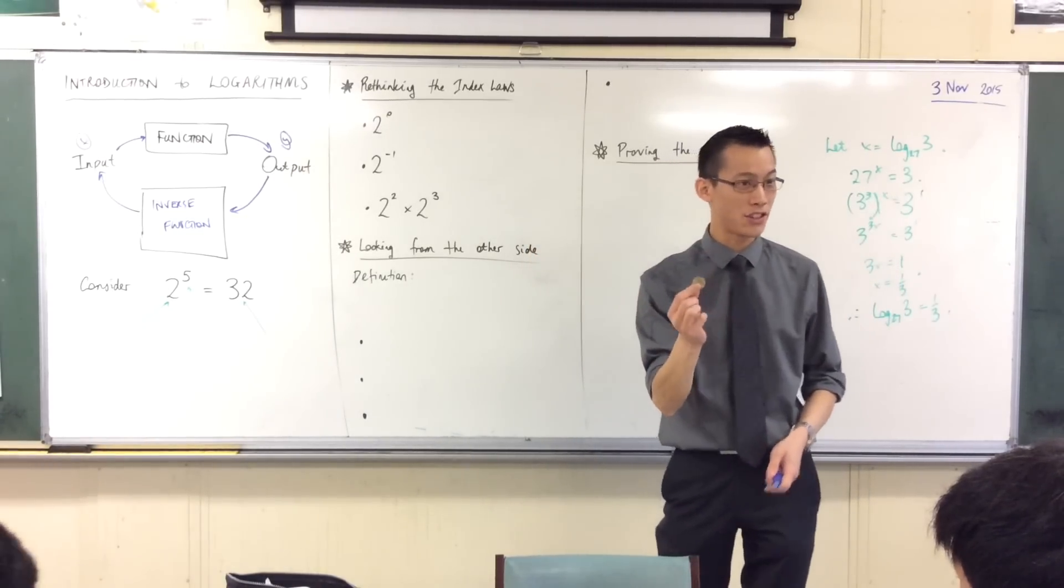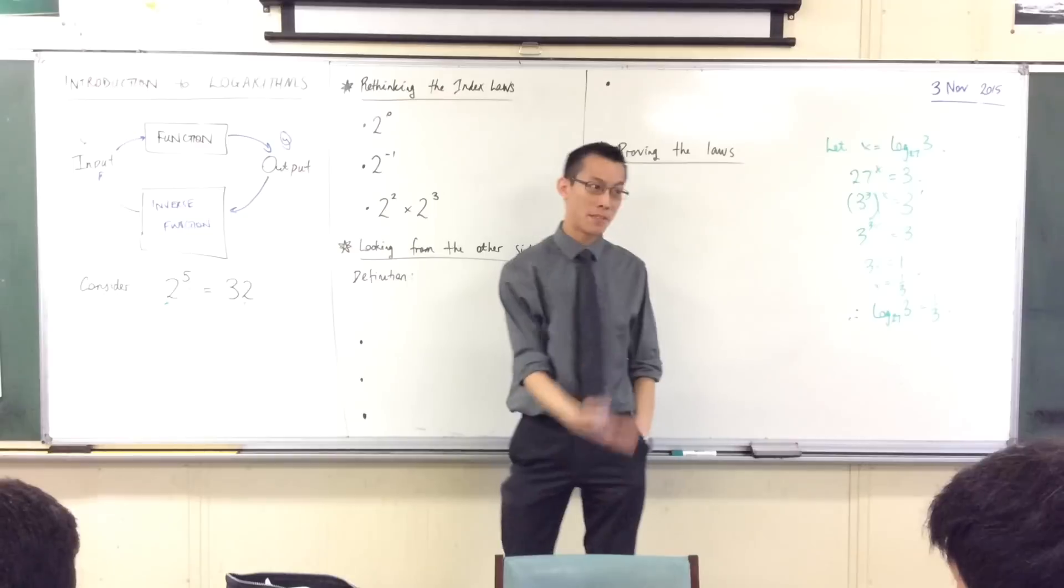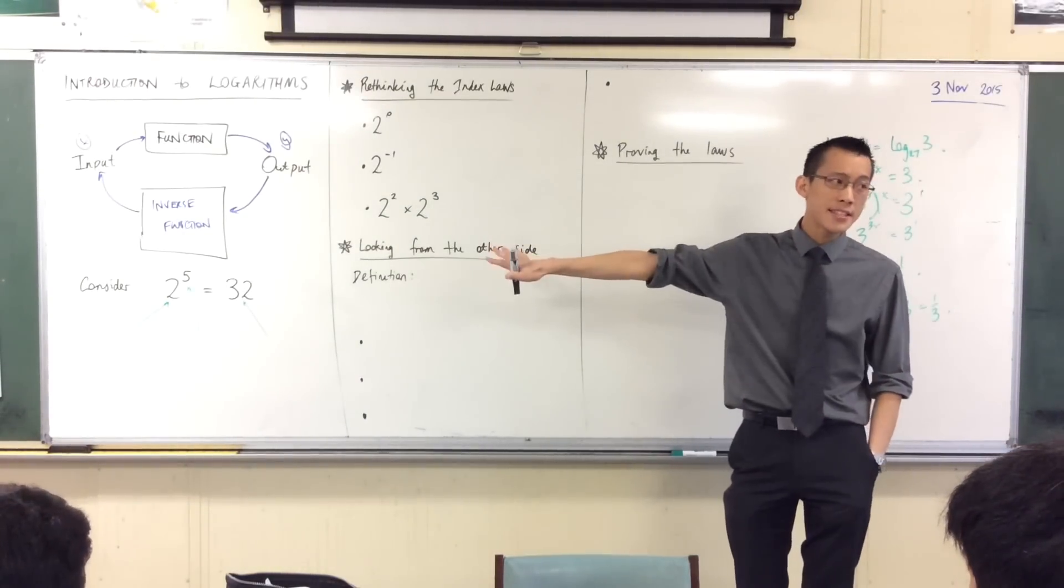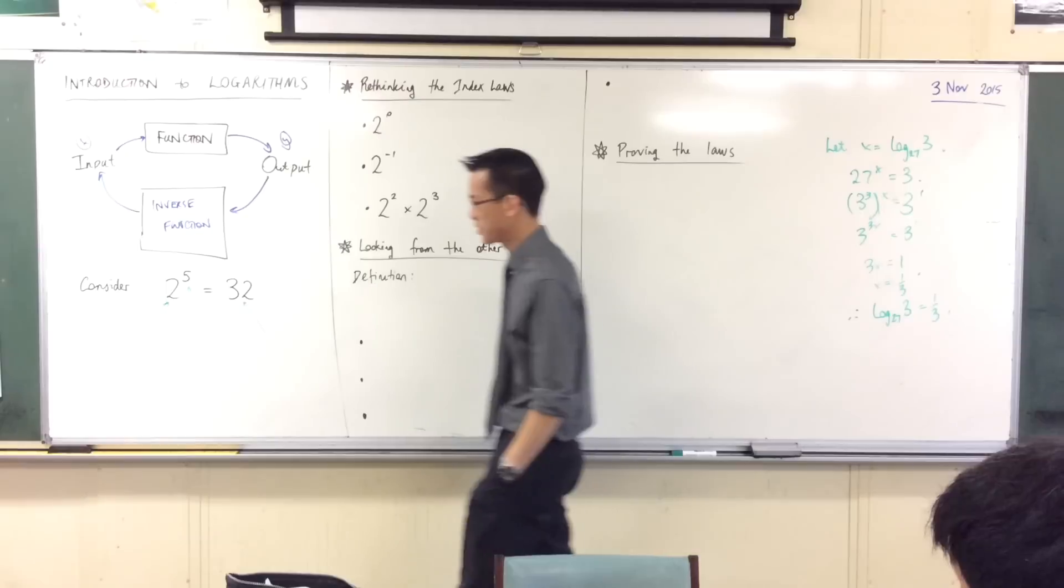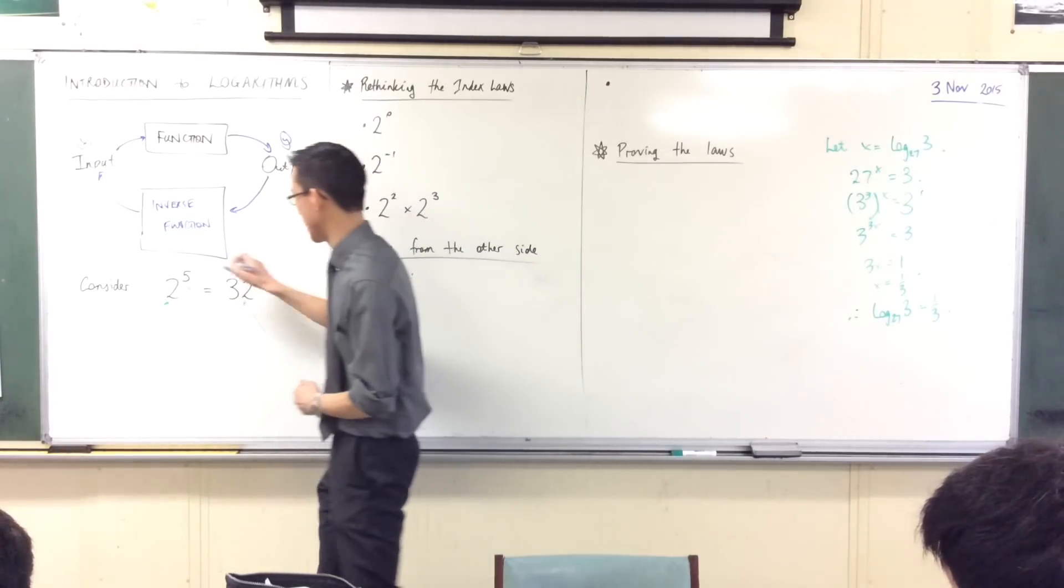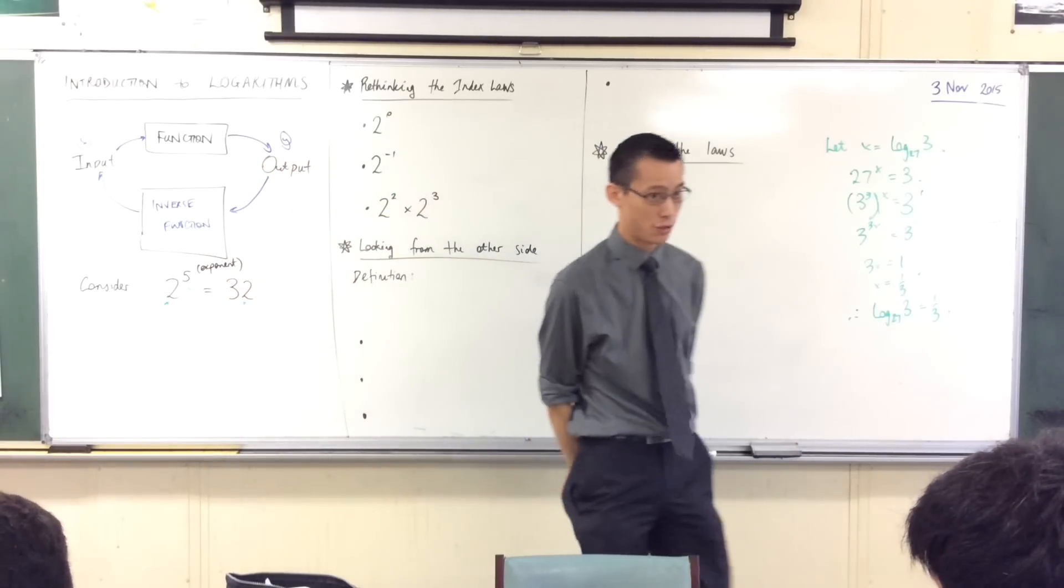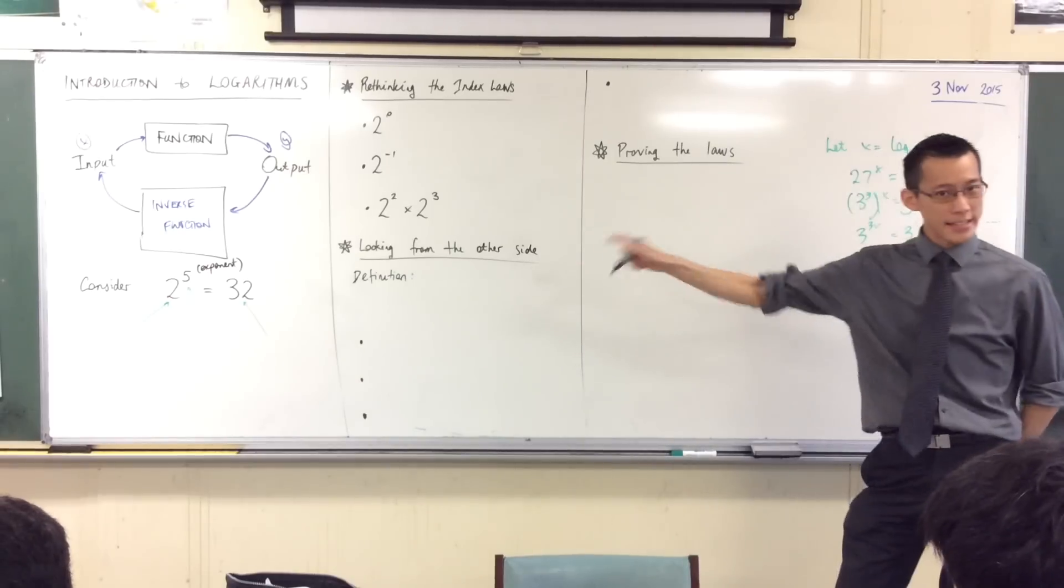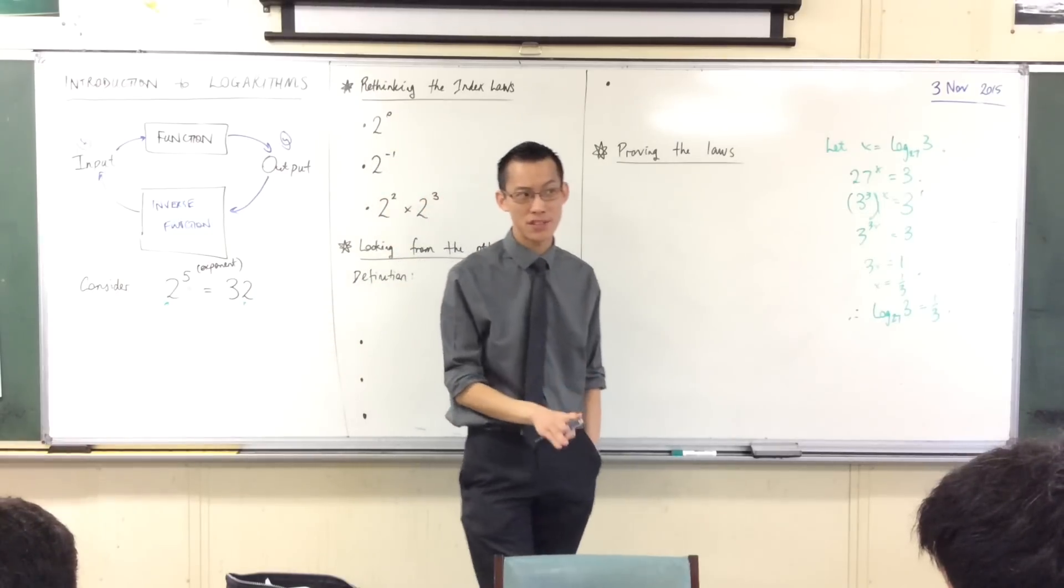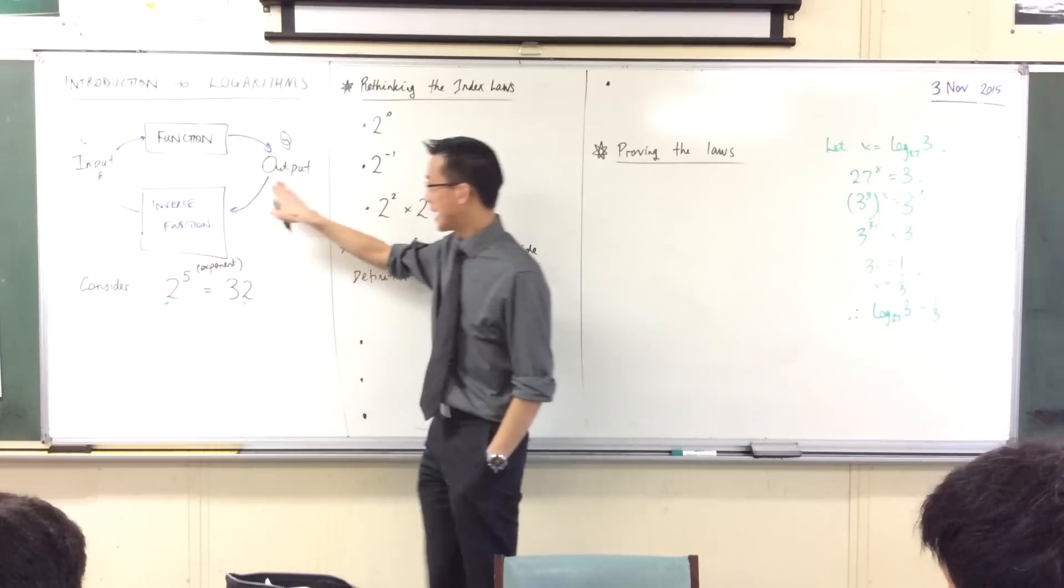Now the particular kind of function, an inverse function, we're going to be paying attention to today, starts with something really simple, something you learned back in like year 7 and 8. This is an exponential function, an exponential function, or an exponential equation. You've got an index there, which another fancy name for that is the exponent, which is why the whole thing is called an exponential. Now, this equation, 2 to the power of 5 equals 32, it tells a story. I've mentioned this to some of you before. It tells a story of taking some inputs and getting an output. Now the question is, what story does it tell?